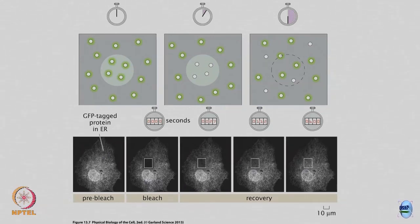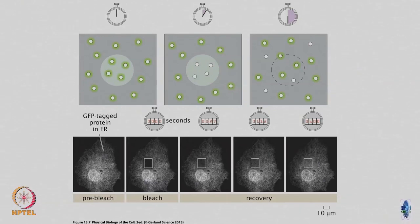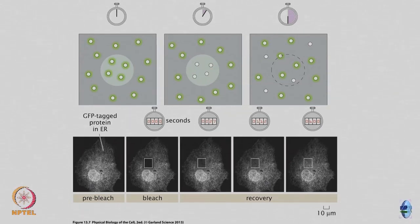What I do is shine a very intense laser on a small region of this cell. What that does is photobleach the fluorescent molecules. A fluorescent molecule has a limited number of photons it can emit - it continuously emits photons and that is why you see the light, but overall it can only emit a limited number. If you shine very intense light you cause all the photons to be emitted and that molecule becomes dark. You shine a very intense laser on a small patch, causing all fluorescent molecules in that region to become dark - they do not fluoresce anymore. This is called photobleaching.